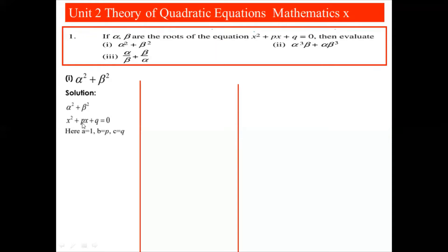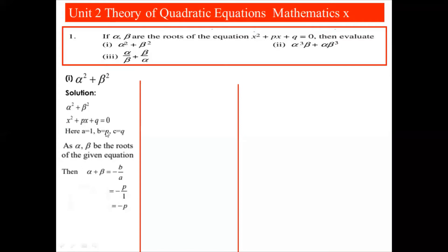The given equation is x² + px + q = 0, so here a = 1, b = p, and c = q, comparing with the standard quadratic equation. Since alpha and beta are the roots, the sum of the roots is α + β = -b/a = -p, and the product of the roots is αβ = c/a = q.